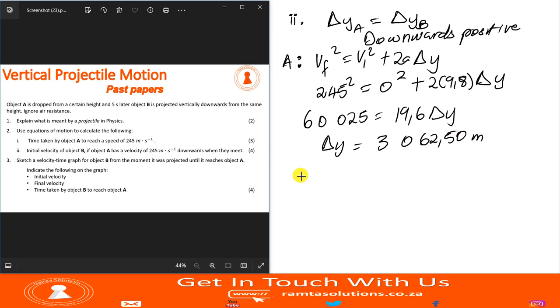So now let's talk about object B. We need to know what is its position. We had set downwards as positive. We have its initial velocity, oh, we don't have its initial velocity. We have the time.